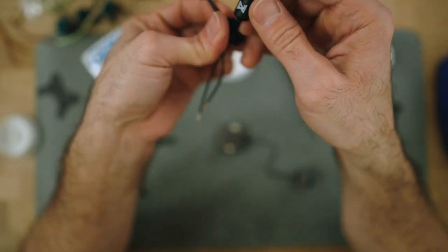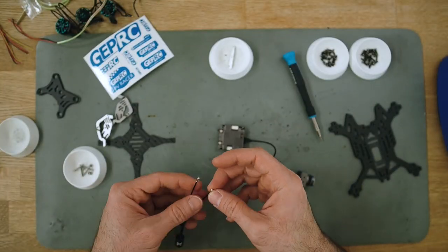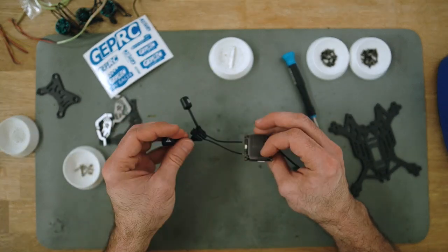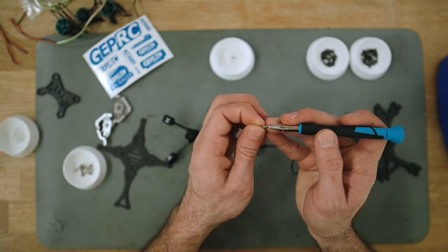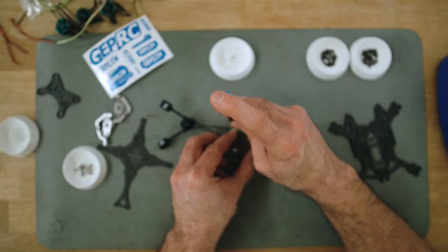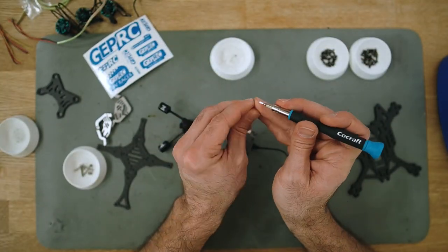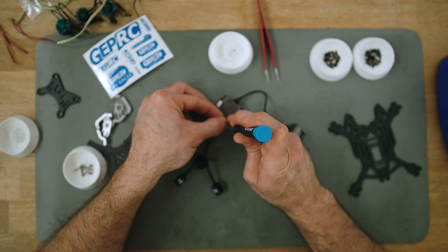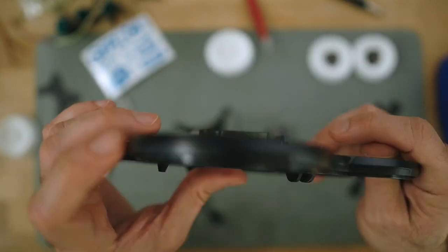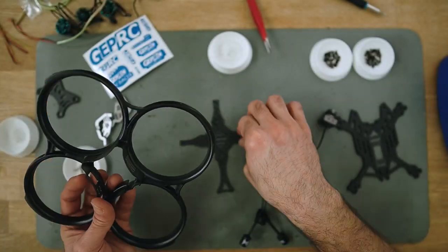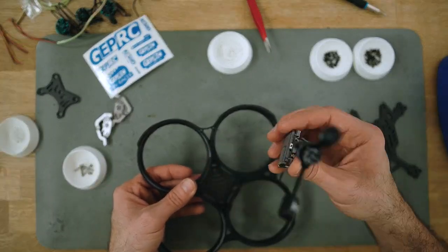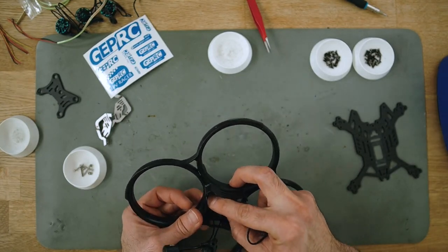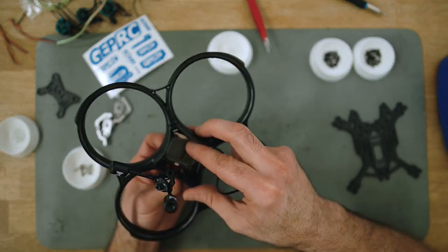This TPU part is pretty interesting because it's designed so you can fit the antennas and then just drag them in. I think it's a pretty cool idea, they did a good job here. The frame has some openings for the flight controller USB port and for the binding button of the VTX, so let's make sure we're aligning things in the right way.